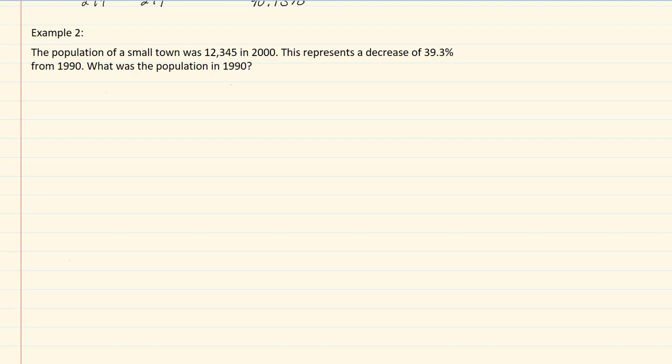That means that our population of 12,345 in 2000 is the final amount. So that's going to go in our numerator, and we don't know what the initial amount is, so that's going to be x. So now for our percents, we have 100 minus our 39.3, and this will be over 100.